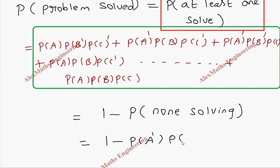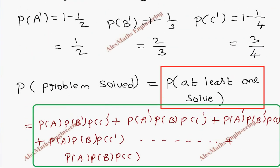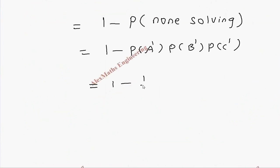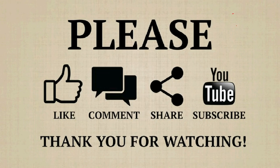None solving means A is not solving, B is not solving, and C is also not solving. Substituting the values: 1 minus P(A') times P(B') times P(C') equals 1 minus (1/2 × 2/3 × 3/4). Cancelling, we are left with 1 minus 1/4, which is 3/4. So the probability that the problem will be solved is 3/4.